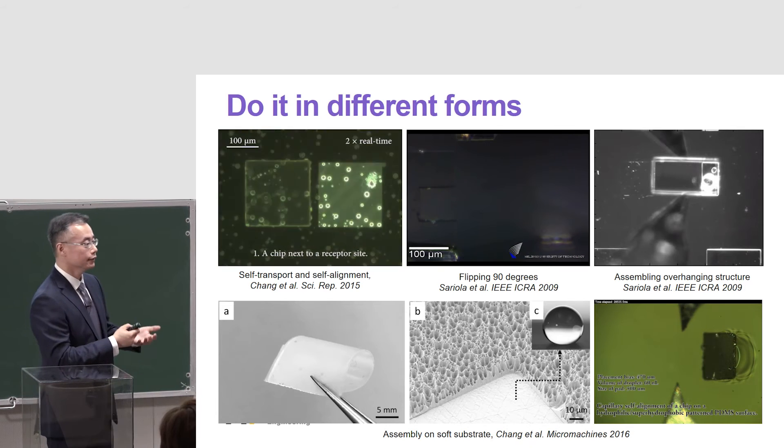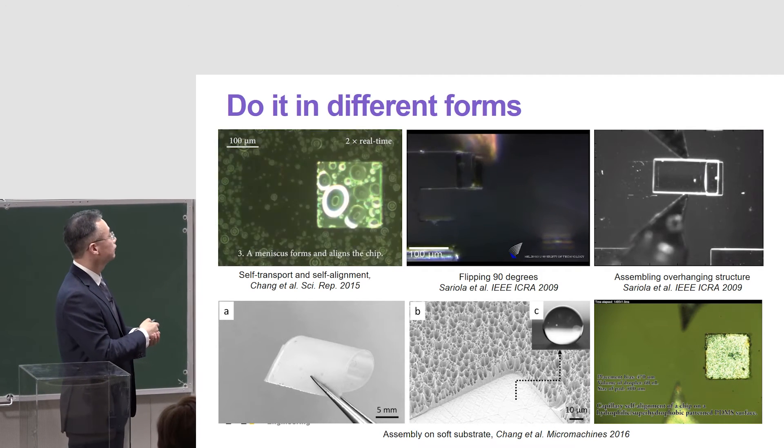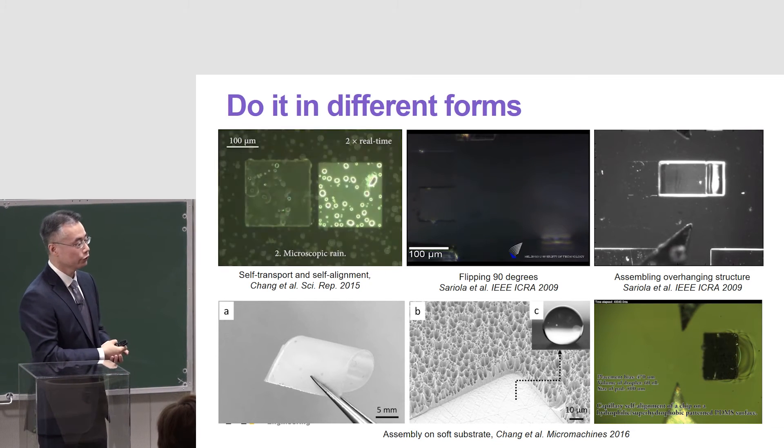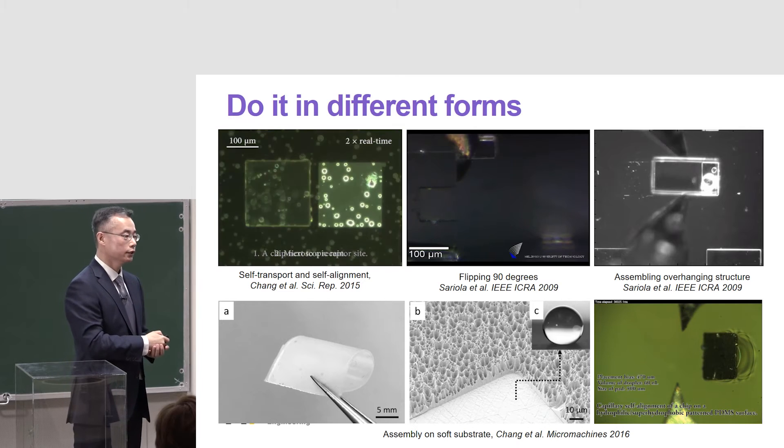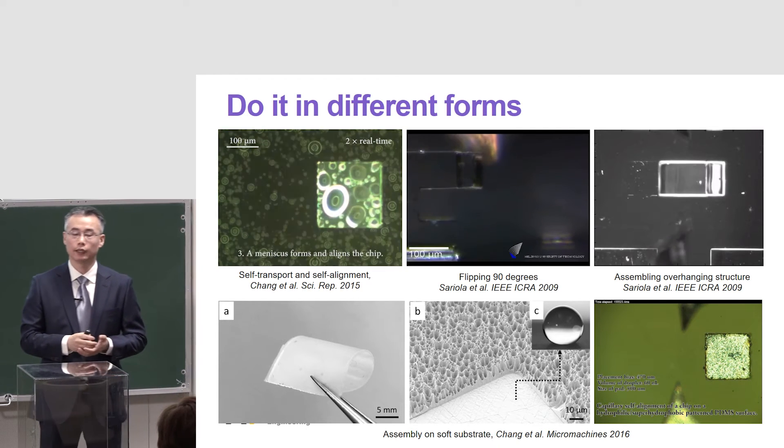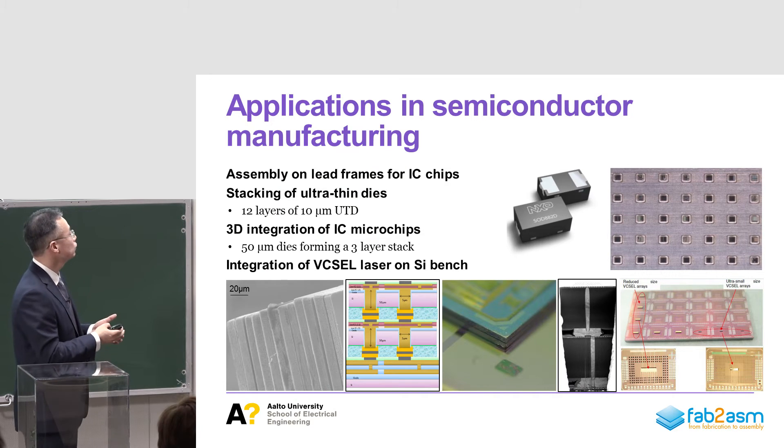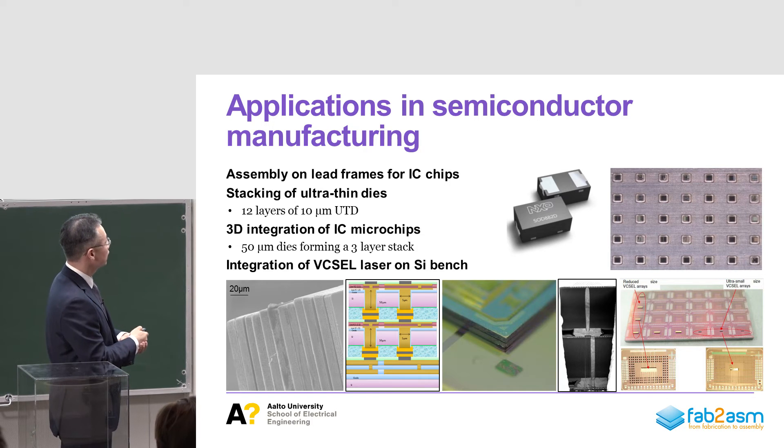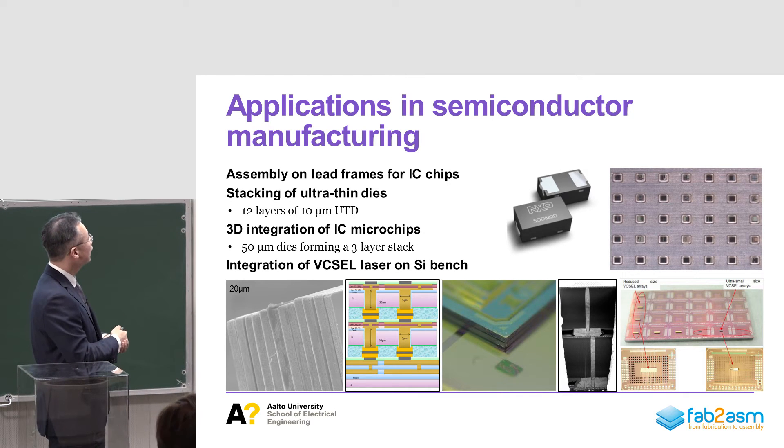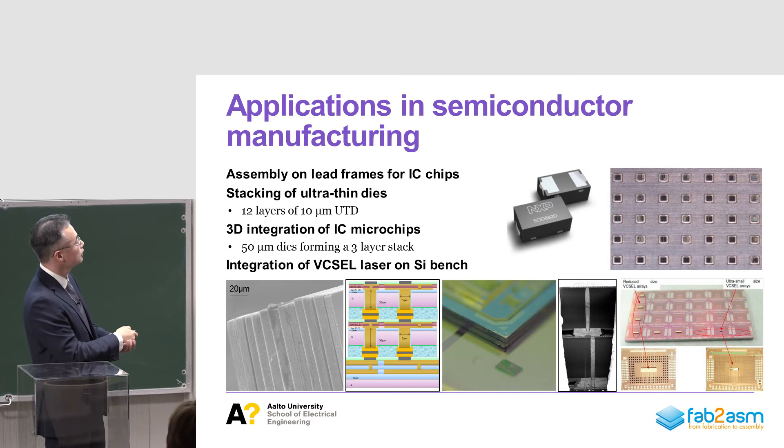We can also do many other things, like transport small objects using capillary arrays, also do textural manipulation like flip chips 90 degrees without robotic rotational joints, or create overhanging structures, or install chips accurately on soft substrates, which is very important as soft devices are a very important trend nowadays. We can integrate the technology into industry demonstrations like IC chips onto lead frames, and stack very thin chips, 10 micrometer chips, creating three-dimensional integrated circuits that have not only horizontal electric circuits but also vertical electric connections. And lasers on substrates.